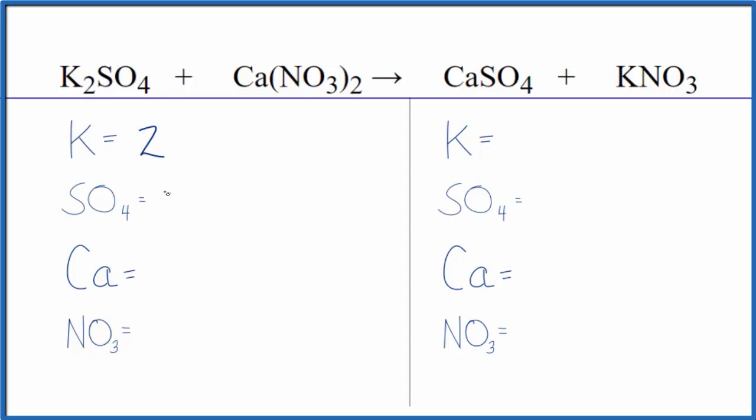We have one sulfate ion here. We have one calcium, and then the nitrate, another polyatomic ion. We have it here. We actually have two of them here. Then we have the nitrate over here. It stayed together. We're going to count it as one thing. One times the two, two nitrate ions.